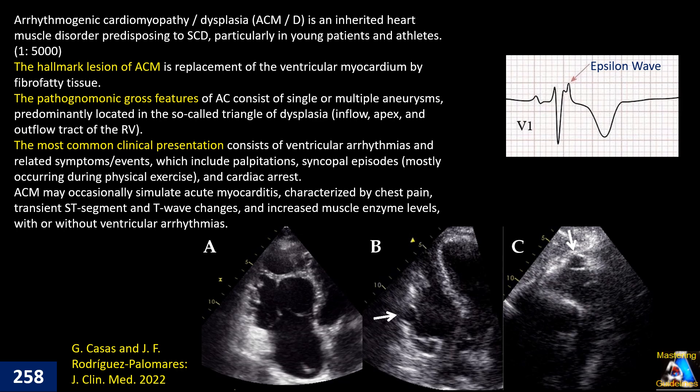Some patients suddenly present with a fulminant form of the disease. The most pathognomonic gross finding on ECHO is segmental wall motion abnormality — this can be dyskinesia, akinesia, or most commonly in the fulminant and classic pattern, aneurysmal. This pattern of segmental wall motion abnormality is a specific characteristic of this disease and is called the triangle of dysplasia.